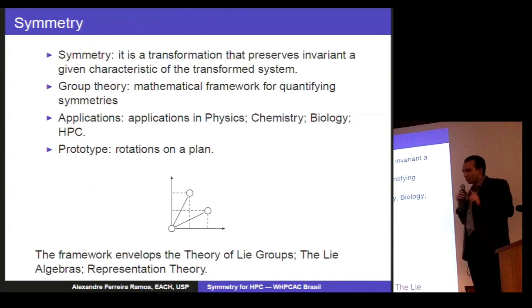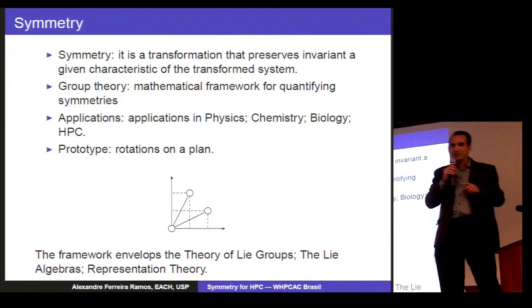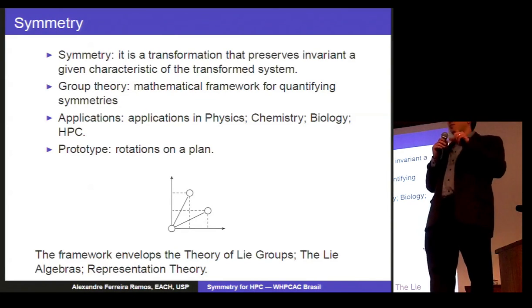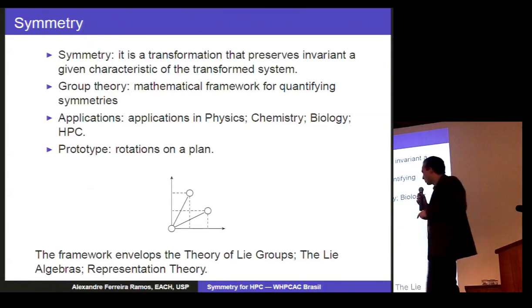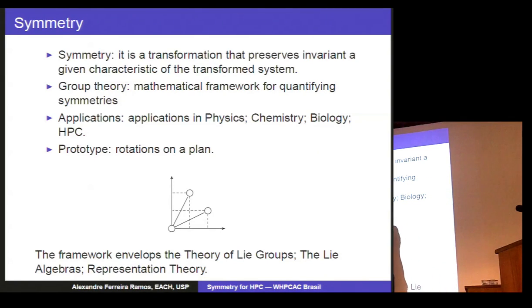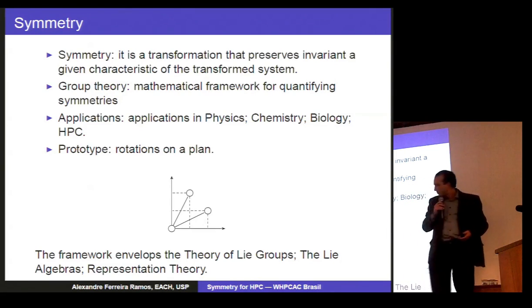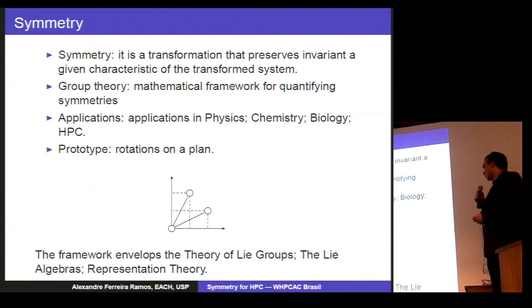There is a two-by-two matrix, it has four elements: cosine of theta, minus sine of theta, cosine of theta, sine of theta, and cosine of theta. You can generate rotations by an angle theta of a rod on a plane. This framework involves more tools, like the group theory of the Lie groups, the Lie algebras, and representation theory that is going to be used by us.